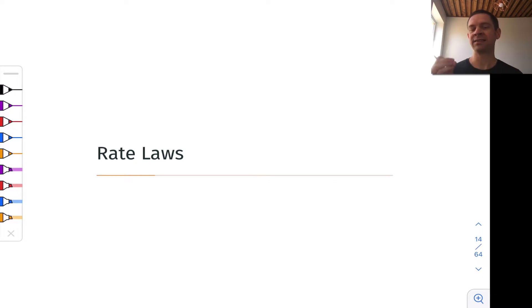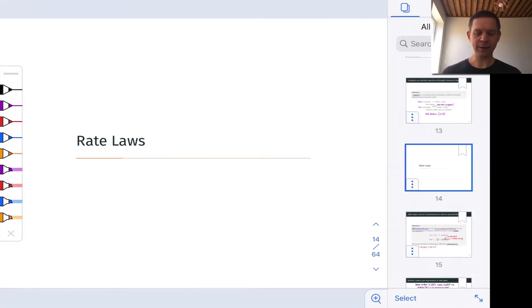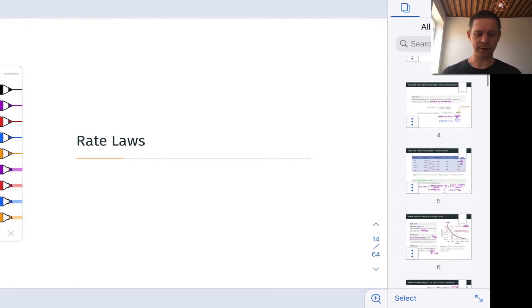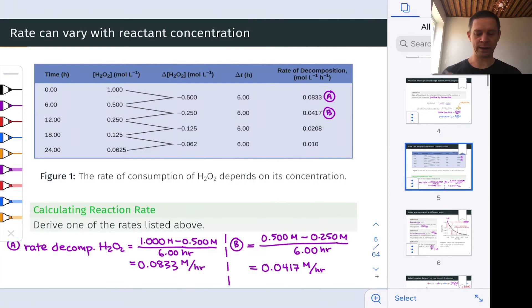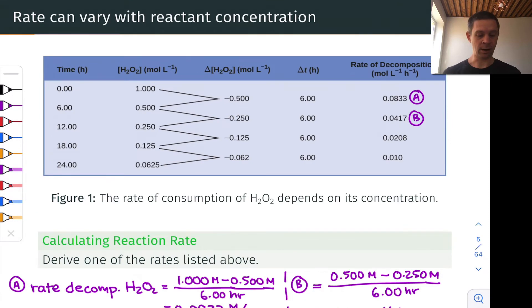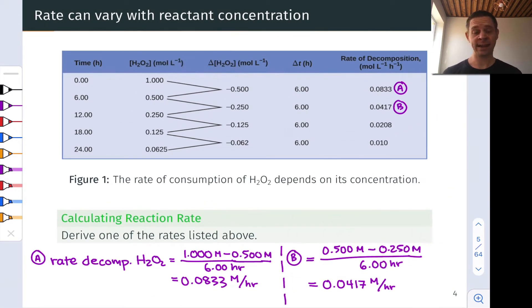It captures how reactant concentrations affect the reaction rate. And to introduce this idea, I want to go back to an observation that we made when we introduced the concept of reaction rate: the fact that rate can vary with reactant concentration.